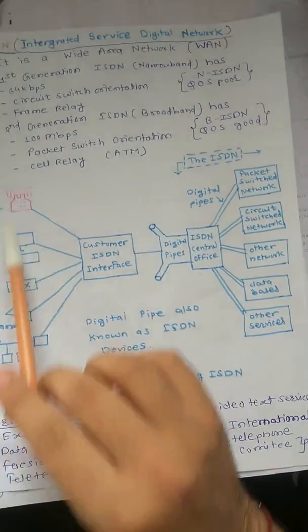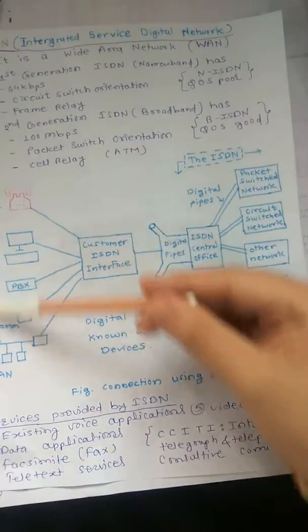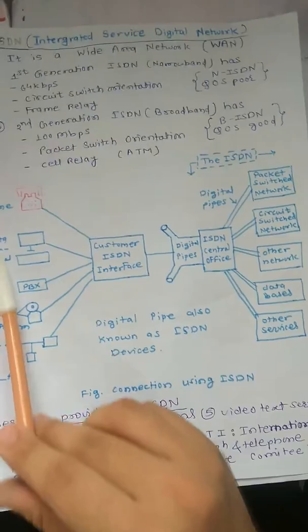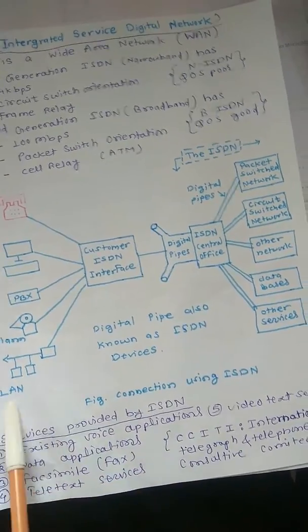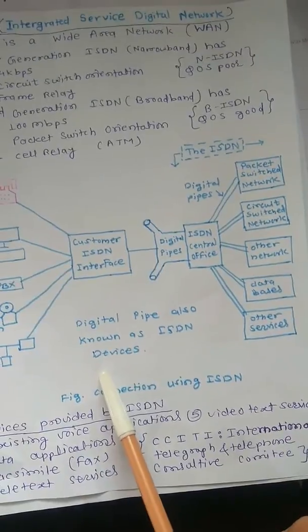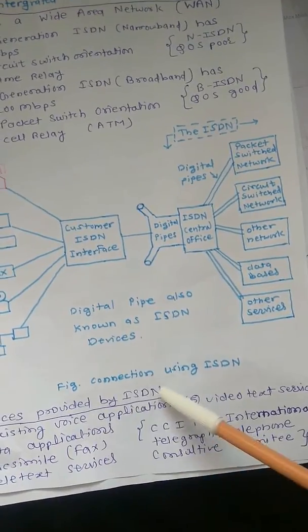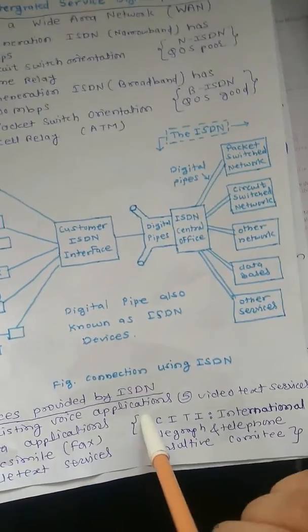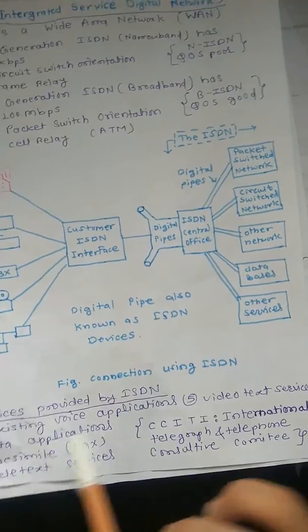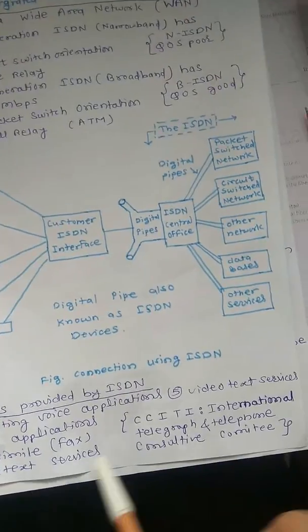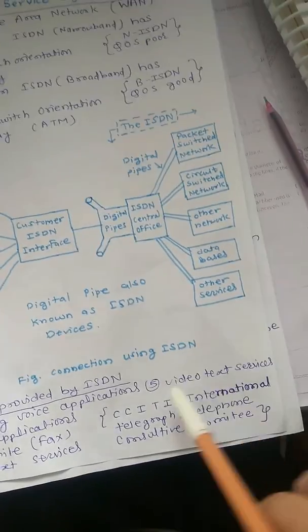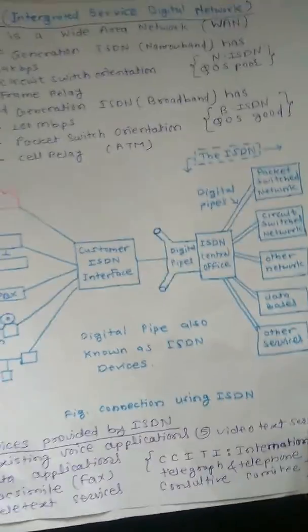These are the applications on the left-hand side: data terminals, PBX, alarms, and LANs. Services provided by ISDN include existing voice applications, data applications, fax, email, text, and videotext services.